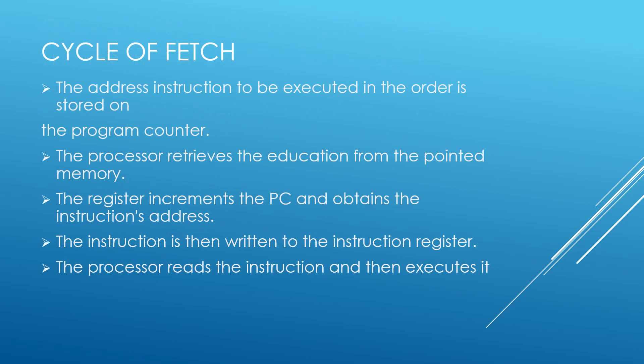Fetch cycle: The program counter stores the address of the instruction to be executed. The processor retrieves the instruction from the memory location pointed to by the program counter. The program counter then increments to obtain the address of the next instruction. The instruction is written to the instruction register, and the processor reads and executes the instruction from the instruction register.